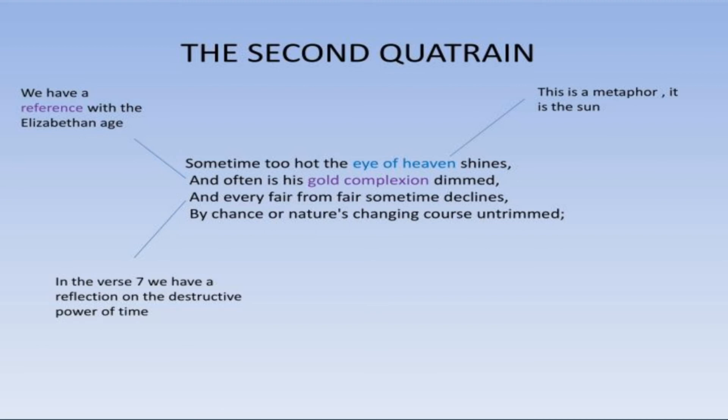The last two lines of this quatrain are very important. Shakespeare says that every beautiful thing in this world has to meet with death — every fair from fair sometimes declines. Every beautiful thing in this world is certainly destroyed by bad luck or by nature's causes. They eventually will come to an end. This is the reality of life. Here, 'the eye of heaven' is a metaphor used for the sun.